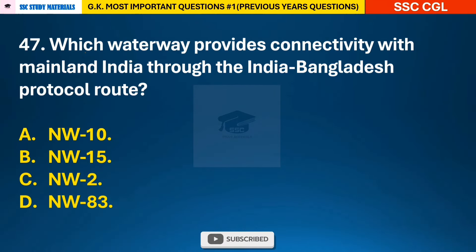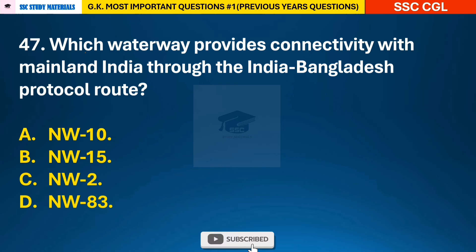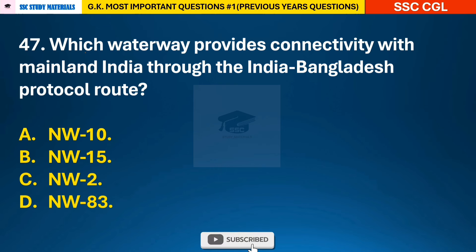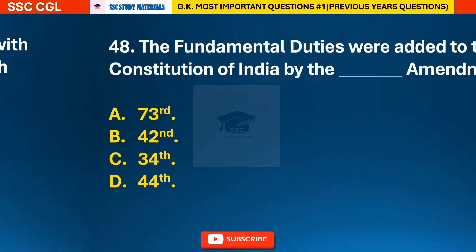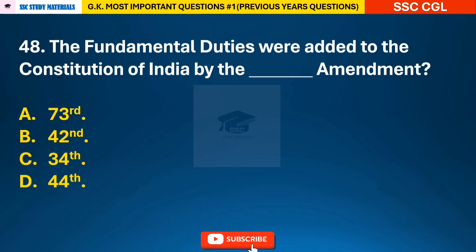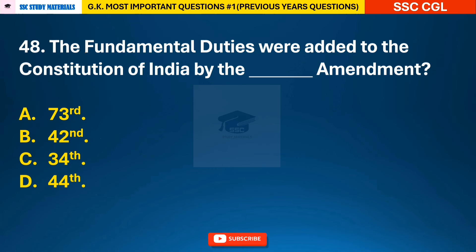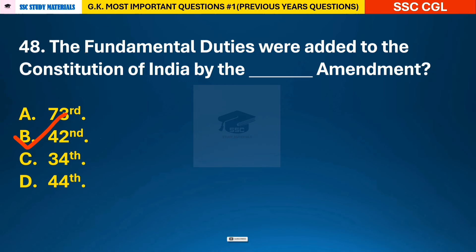Question 47: Which waterway provides connectivity with mainland India through the India-Bangladesh Protocol Route? — answer C: NW2. Question 48: The Fundamental Duties were added to the Constitution of India by which amendment? — answer B: the 42nd Amendment.